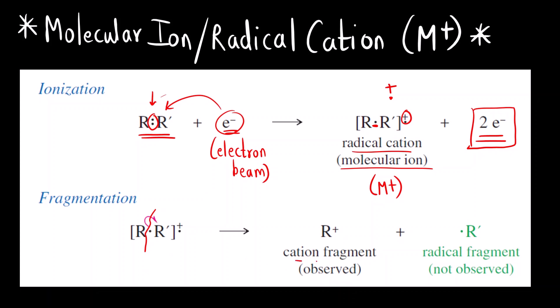After fragmentation, we get a fragment with smaller mass. The total molecular weight represents all atoms present in the molecule. We get a cation fragment — a charged fragment — that is detectable. The radical fragment is uncharged and therefore not observed.